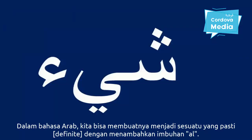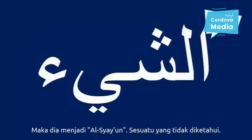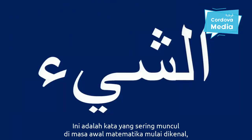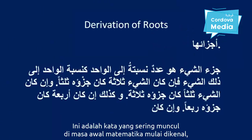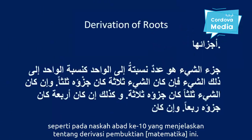In Arabic, we can make this definite by adding the definite article al. So this is al-sheen — the unknown thing. And this is a word that appears throughout early mathematics, such as this 10th century derivation of proofs.